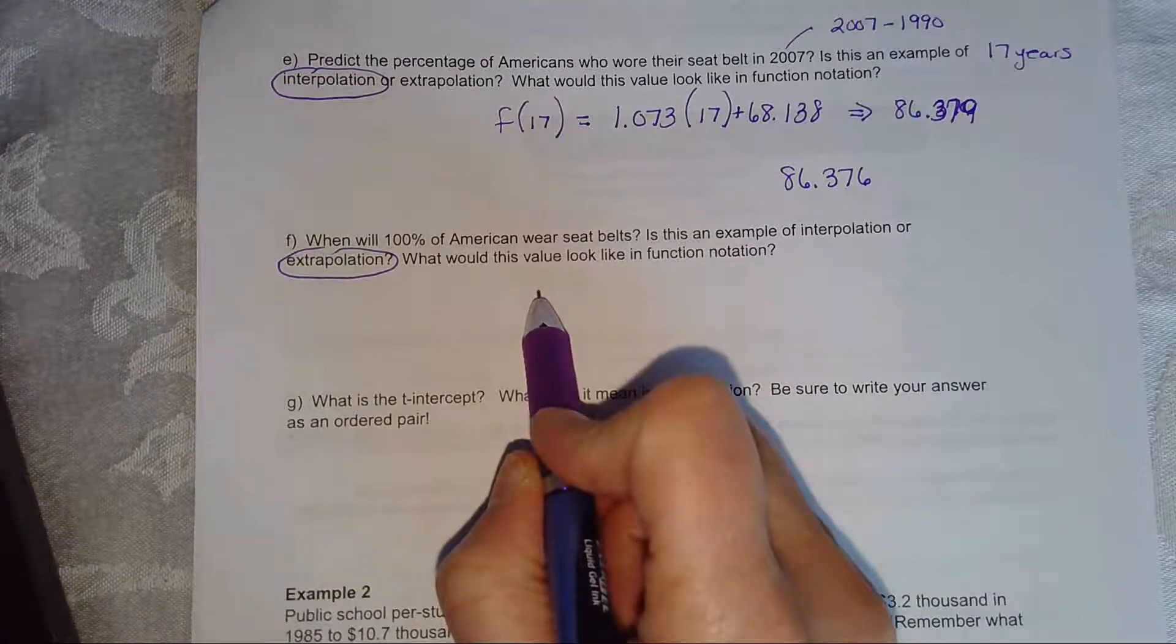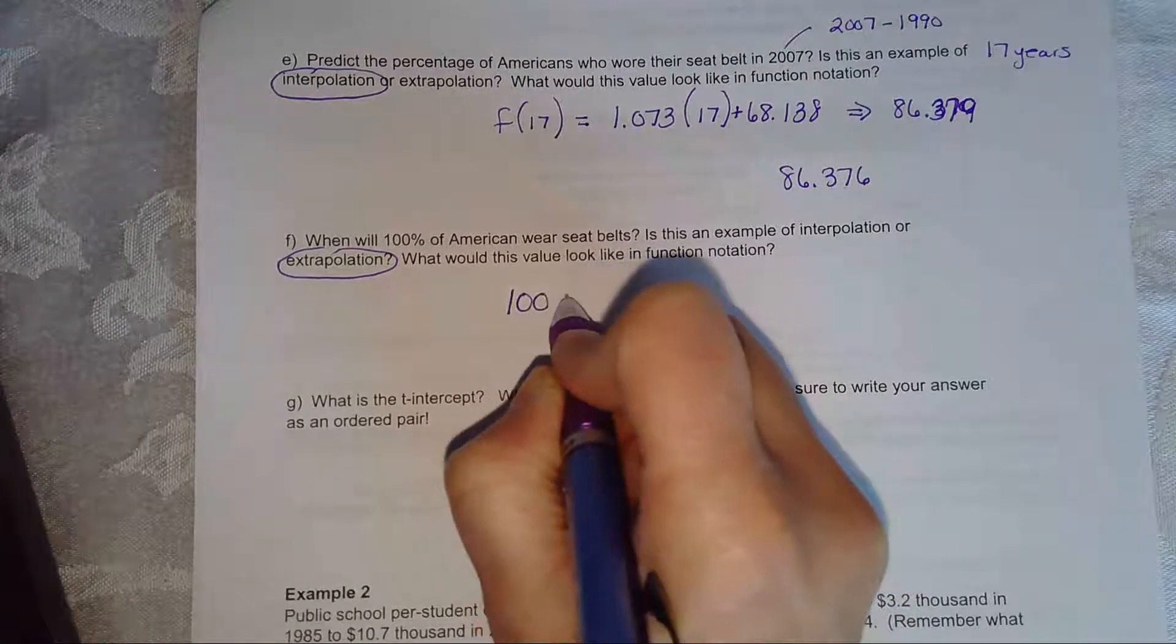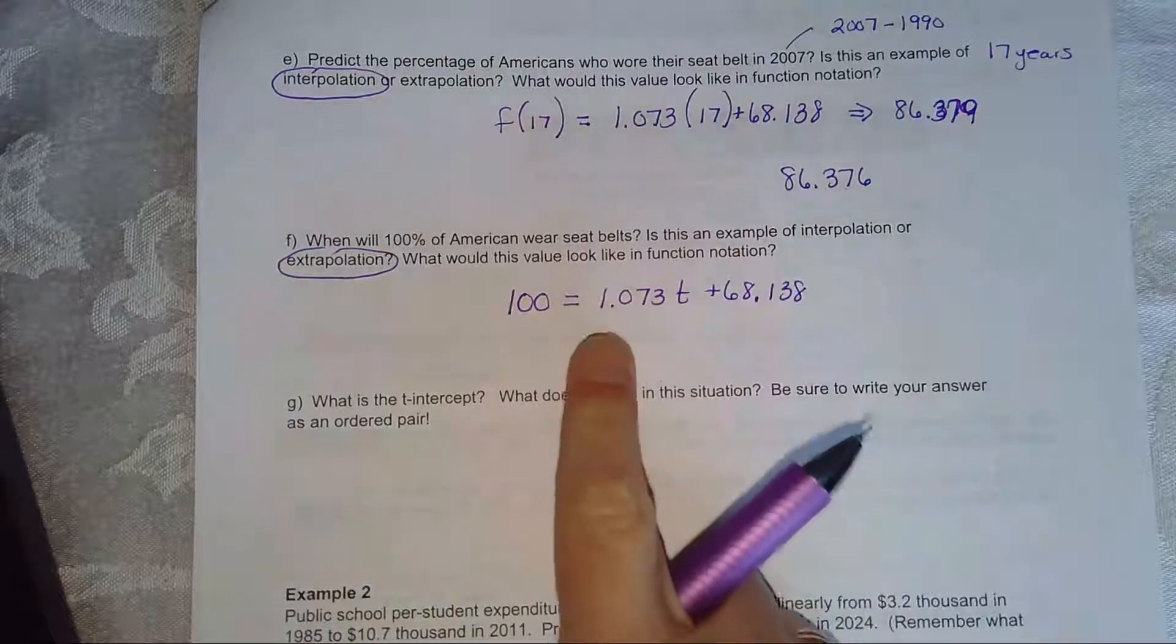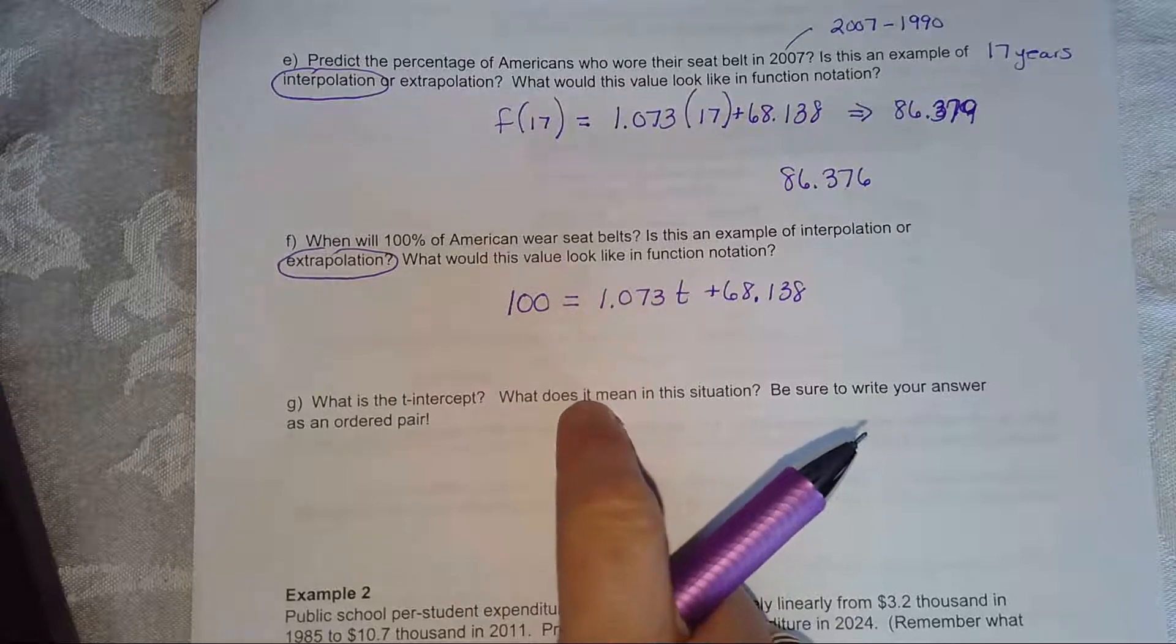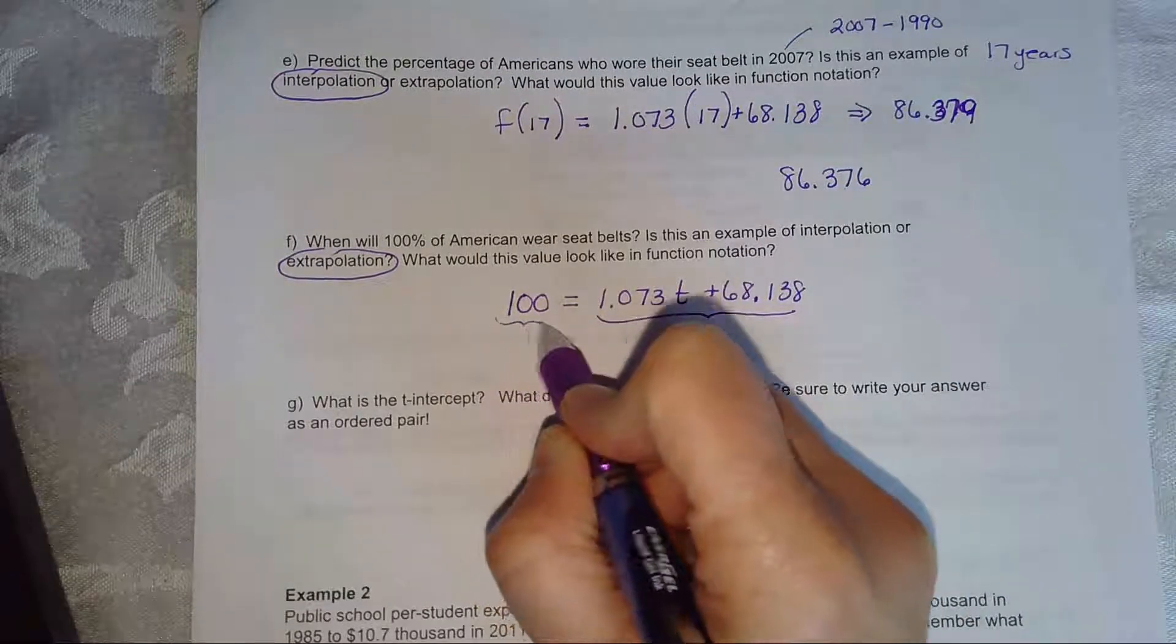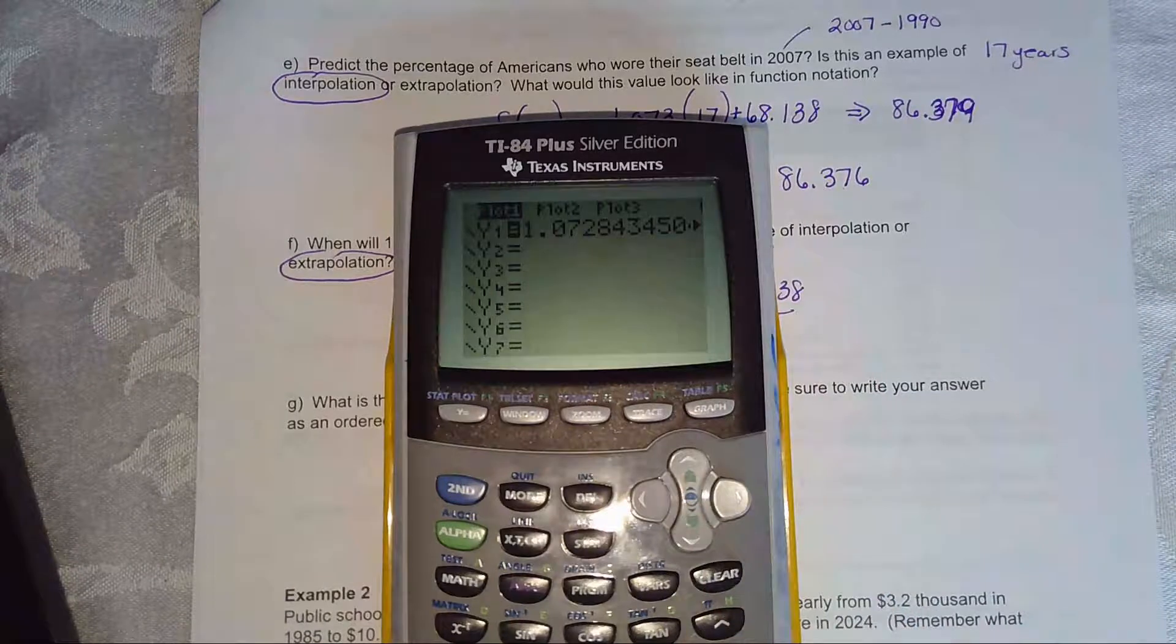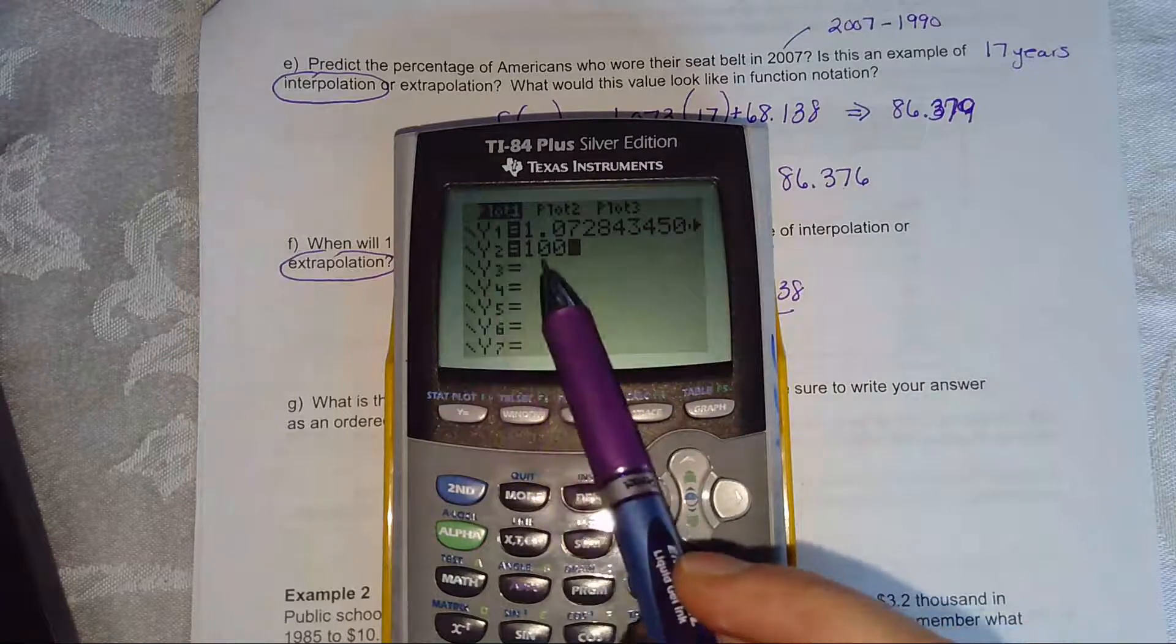And we want to know in what year will a hundred percent of Americans be wearing their seatbelts. Now you can, of course, subtract the 68 and then divide. But I want to remind you how to use the intersect key on your calculator. This is in y1. And we're going to put in y2 because we're going to have to change our windows a little bit. So we already have our function in y1. And now I'm going to put 100 in y2 to figure out when the y value is going to be 100. What t value will get us that?